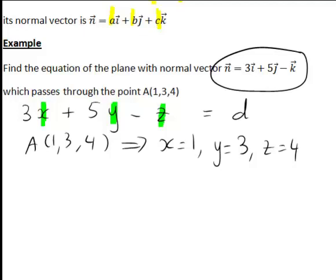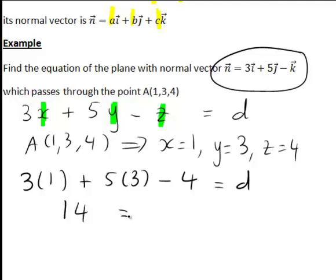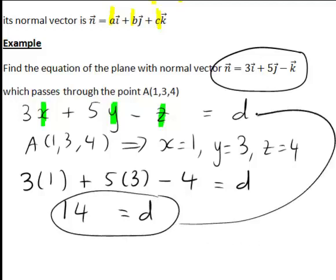So doing that in particular we end up with 3 times 1 plus 5 times 3 minus 4 is equal to D which just works out to be 14 equal to D. So therefore we can now substitute that in there which gives us that the equation of our plane is 3x plus 5y minus z equal to 14.